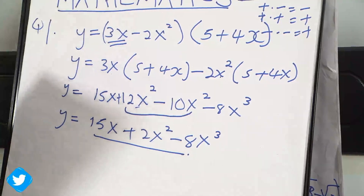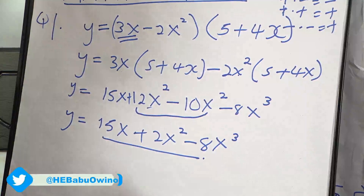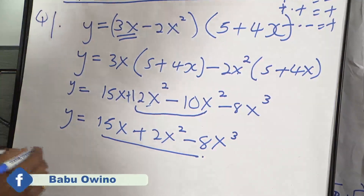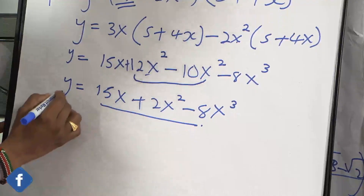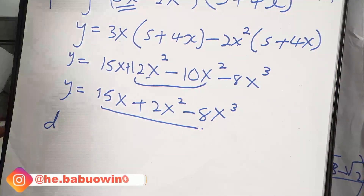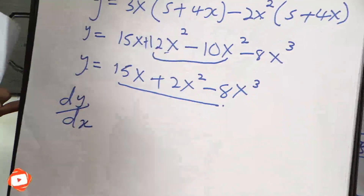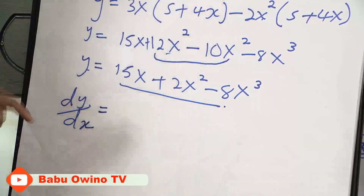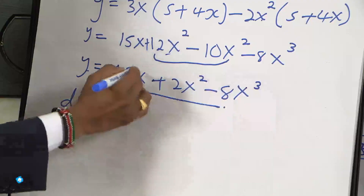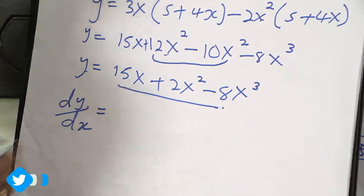Then we are asked to find the derivative, that is differentiation. Differentiation is the gradient function. Now we are going to get dy/dx — the value of y with respect to x. This is what we call differentiation. When we want to differentiate, we will differentiate every part. So we will first of all start by differentiating 15x.